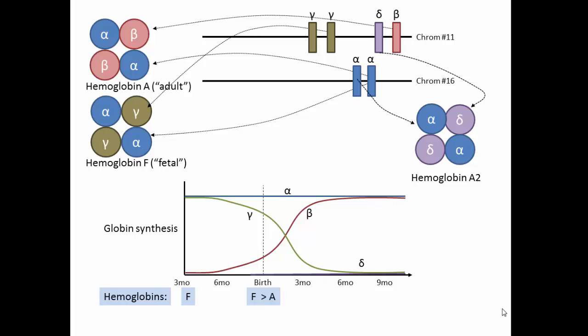At birth, there is more fetal than adult hemoglobin, and in the older infant and adult, the dominant hemoglobin is A, with very small amounts of F and A2.